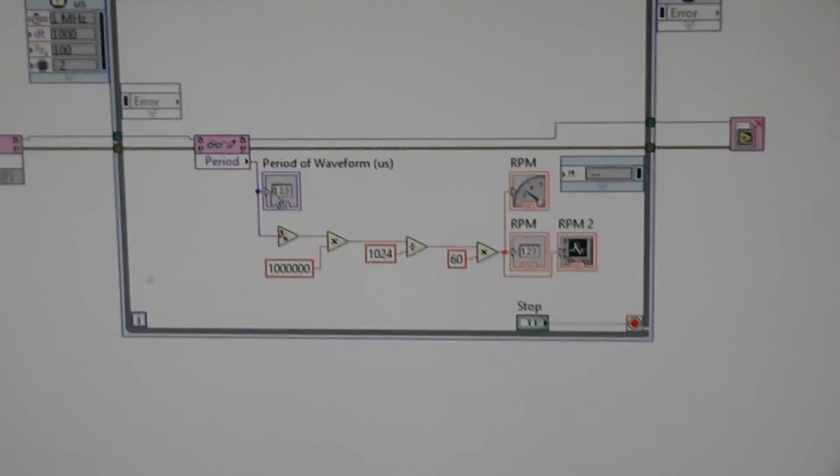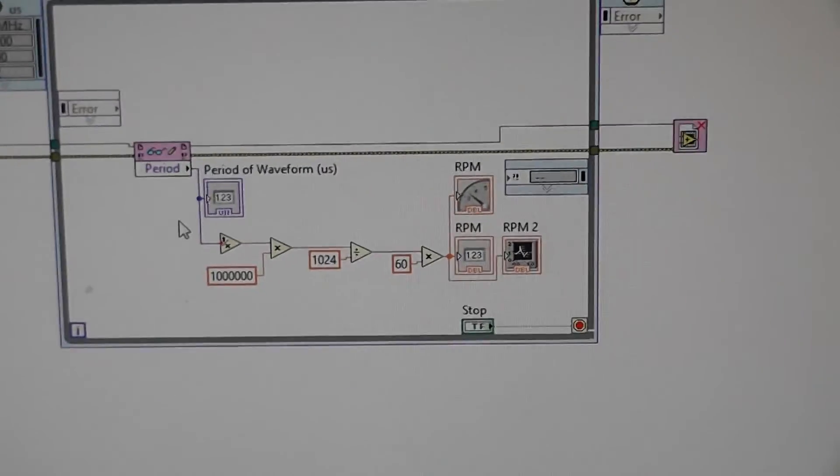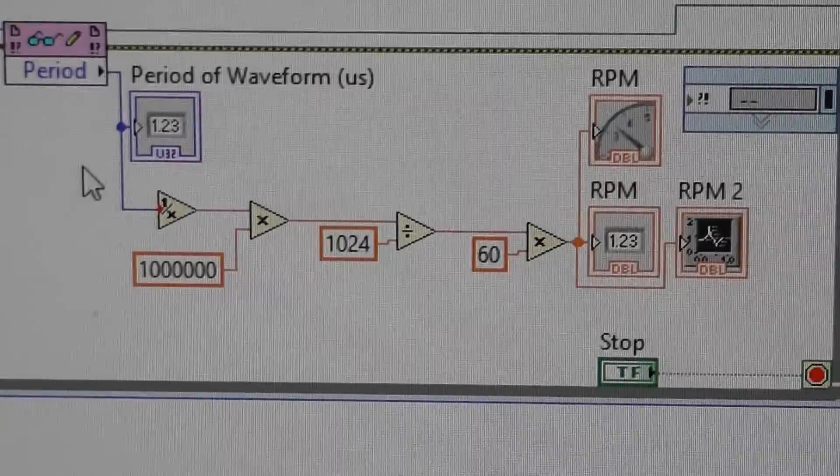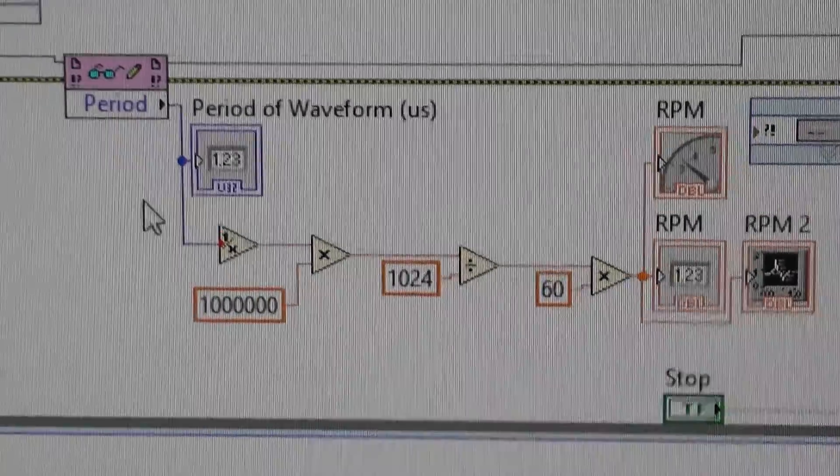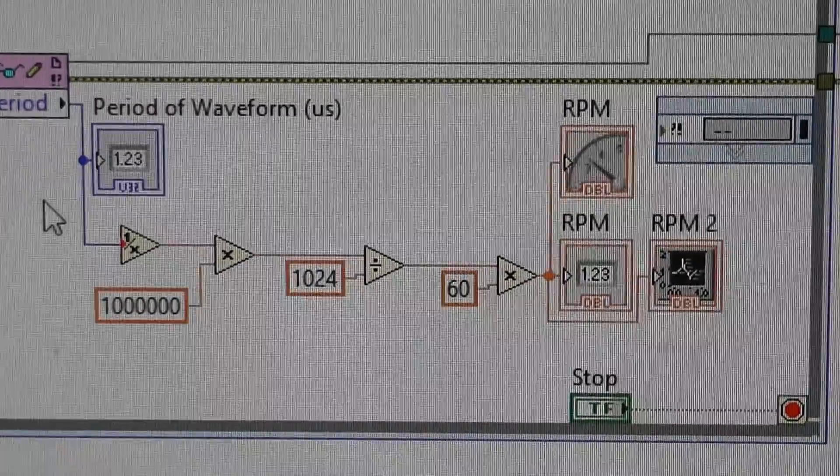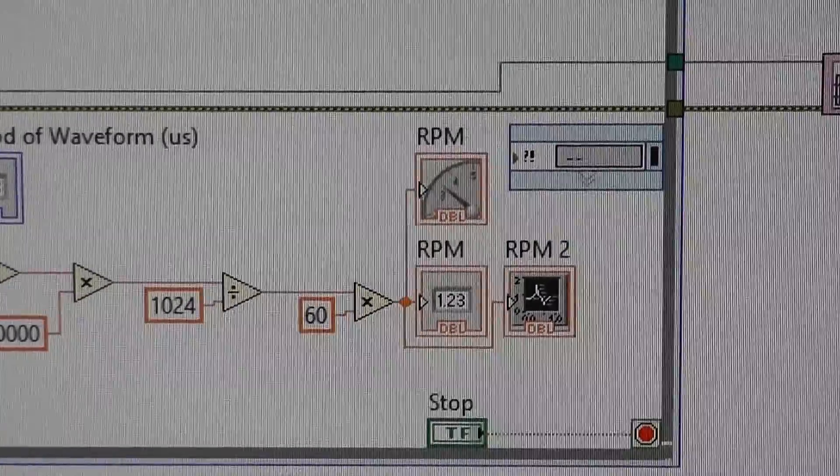And on the host, you read that value from the period of the waveform. And we reciprocate it, multiply it by a million because we're sampling at one megahertz.